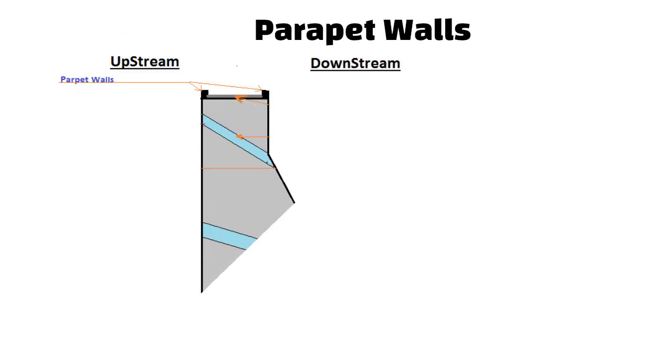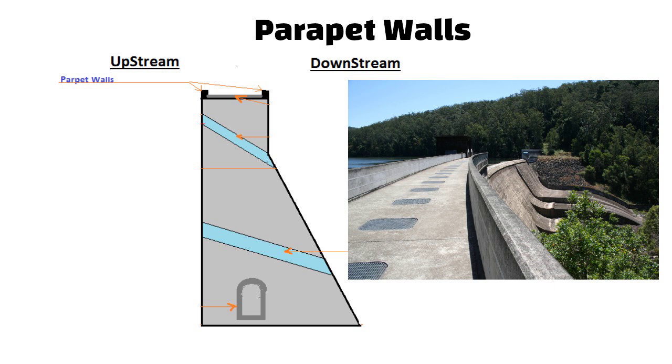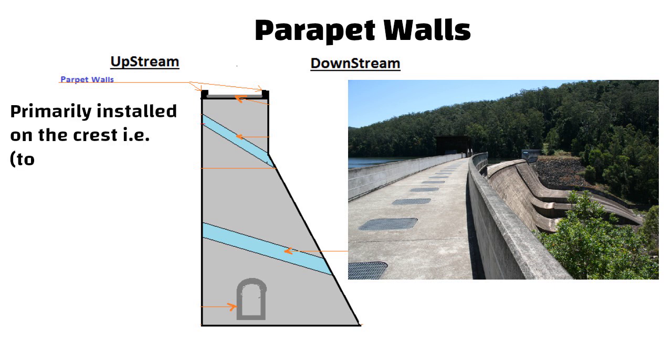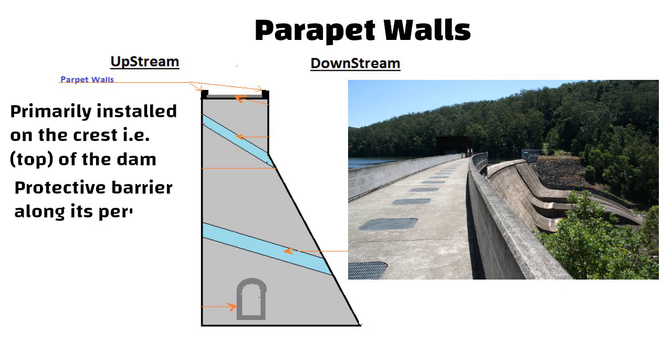Parapet walls. Parapet walls are primarily installed on the crest, that is the top of the dam, to provide a protective barrier along its perimeter.